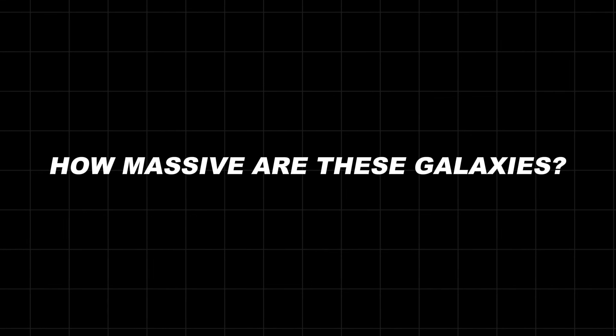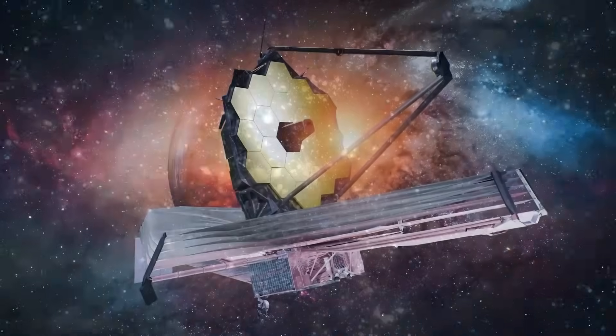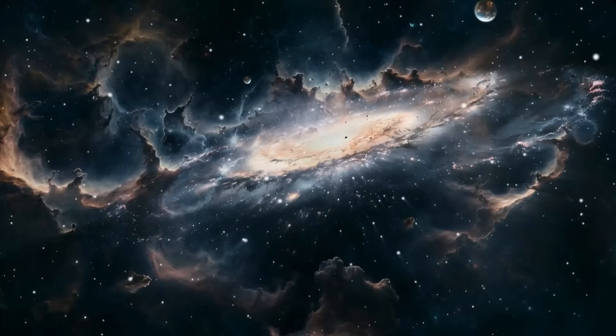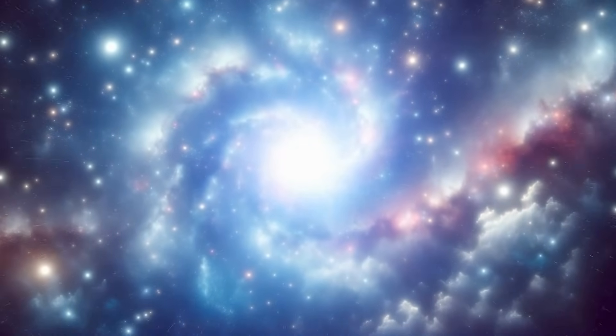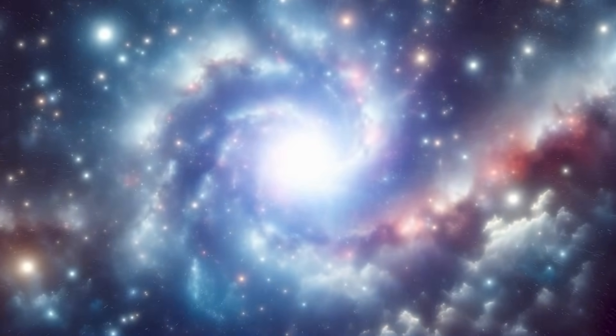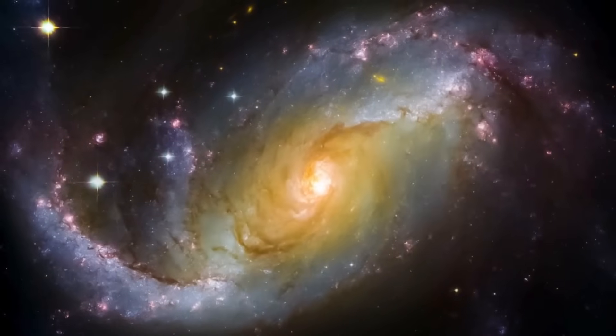Let's talk numbers. Some of the galaxies discovered by JWST have stellar masses equal to 100 billion suns. That's the same mass as the Milky Way. But the Milky Way had billions of years to grow. These ancient galaxies formed in just a few hundred million years.